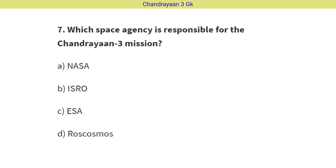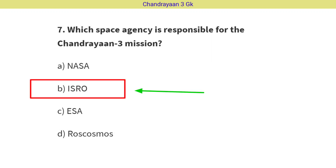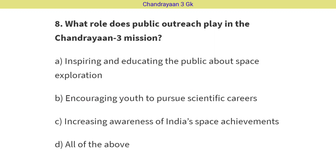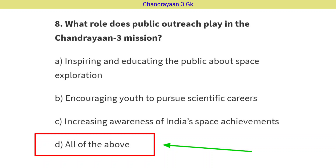Question No. 7: Which space agency is responsible for the Chandrayaan-3 mission? The correct answer is Option B, i.e. ISRO. Question No. 8: What role does public outreach play in the Chandrayaan-3 mission? The correct answer is Option D, i.e. All of the above.